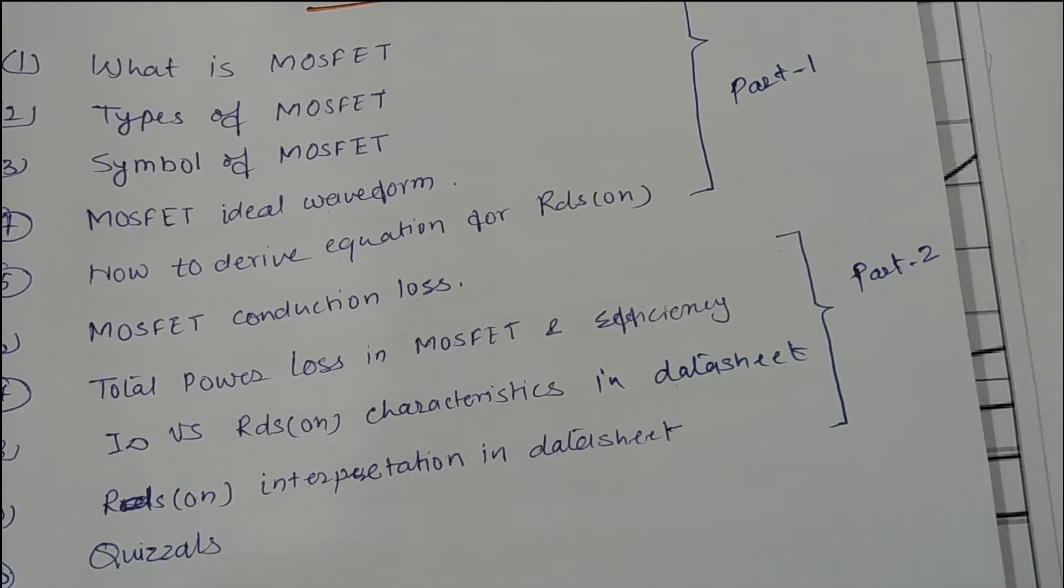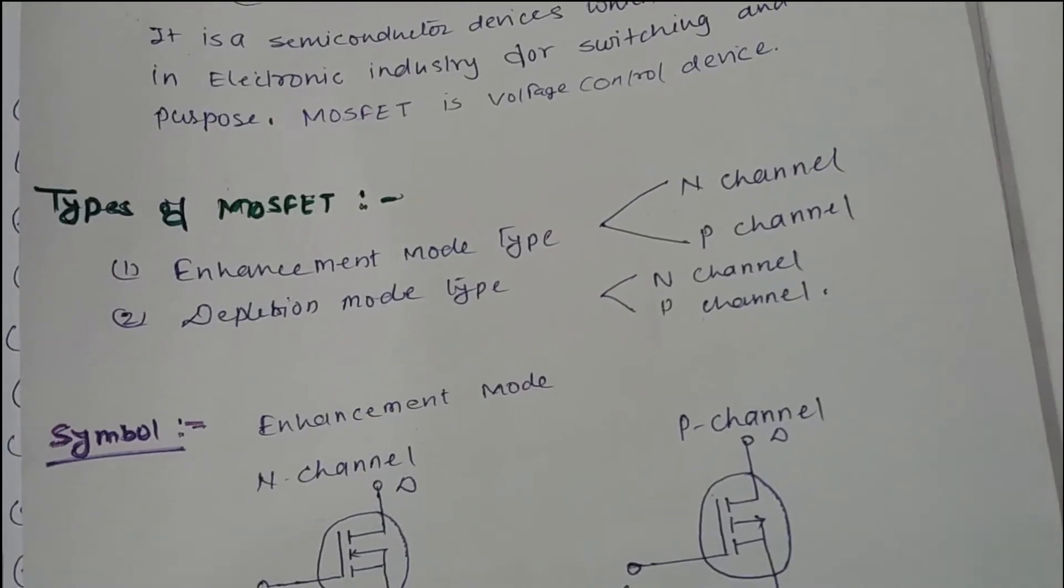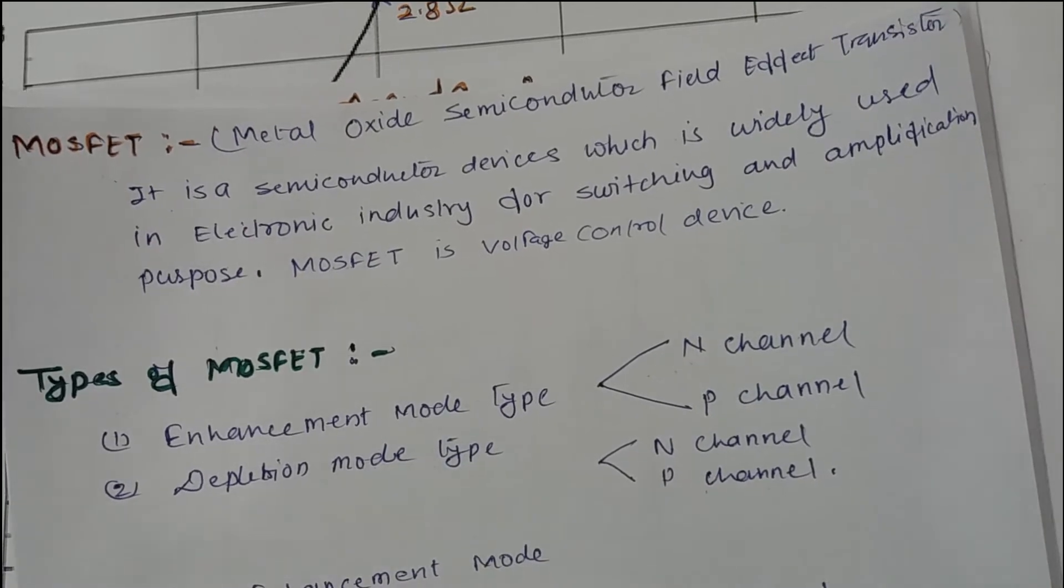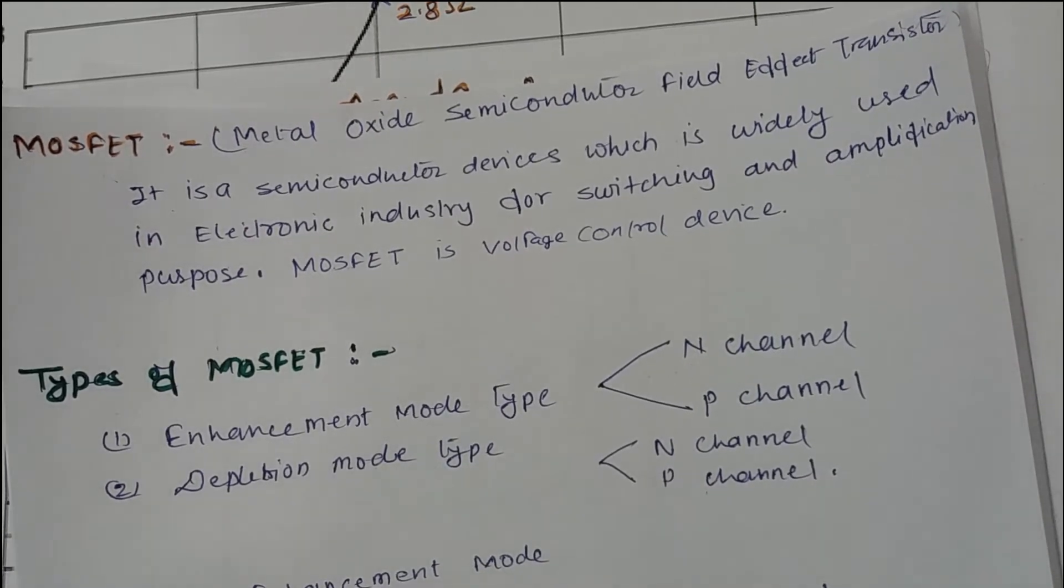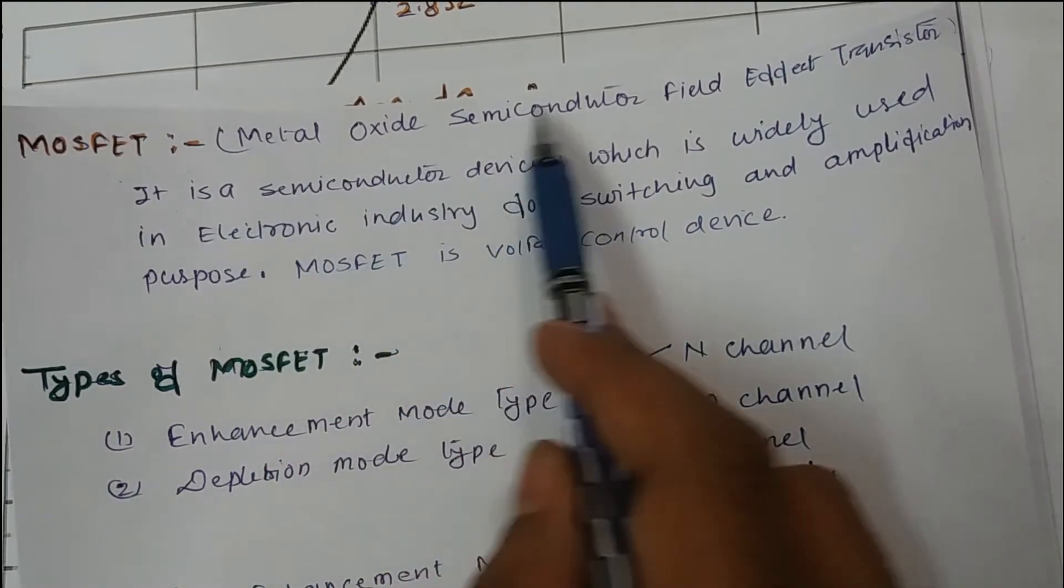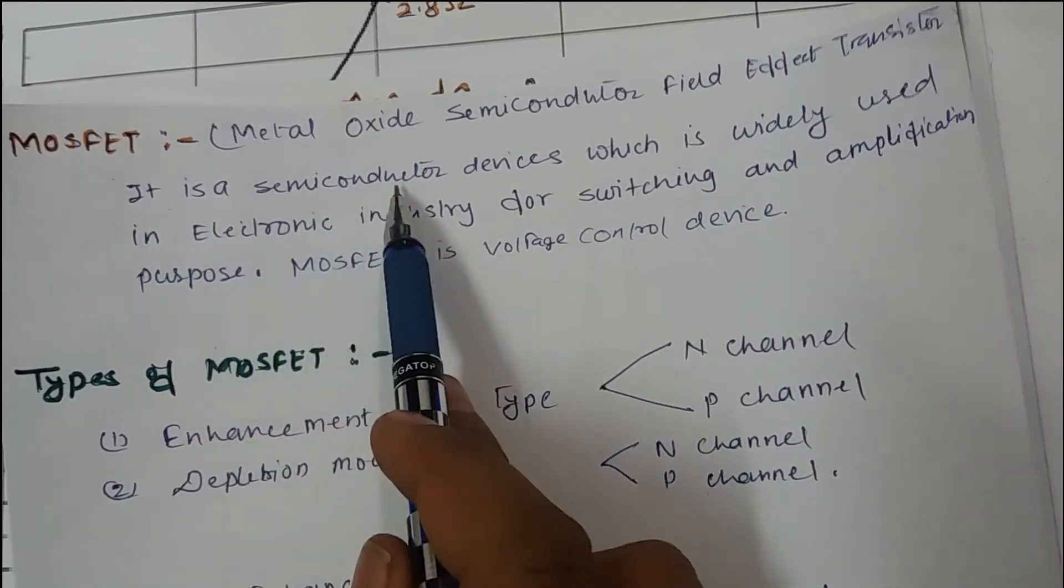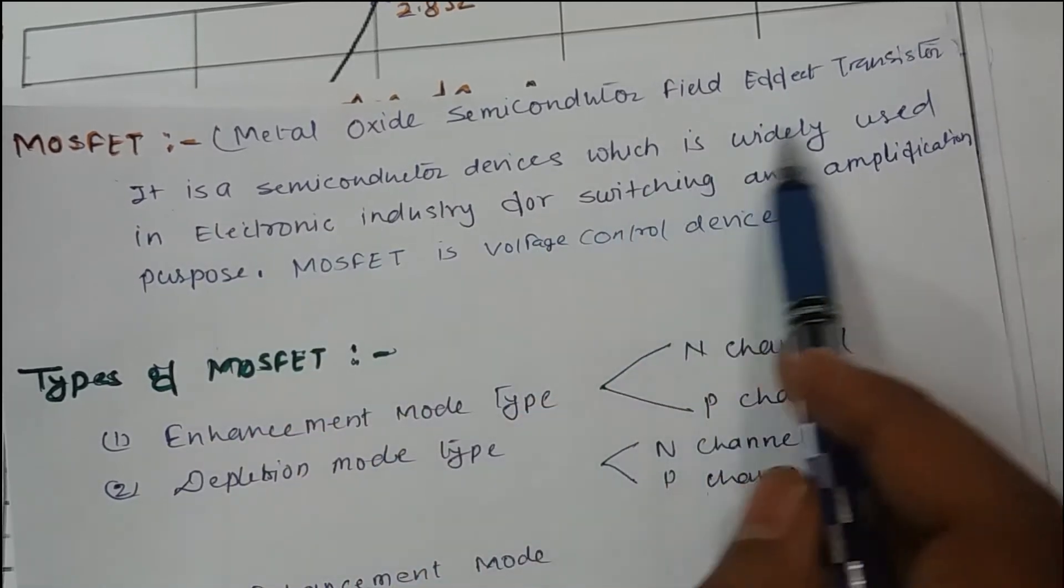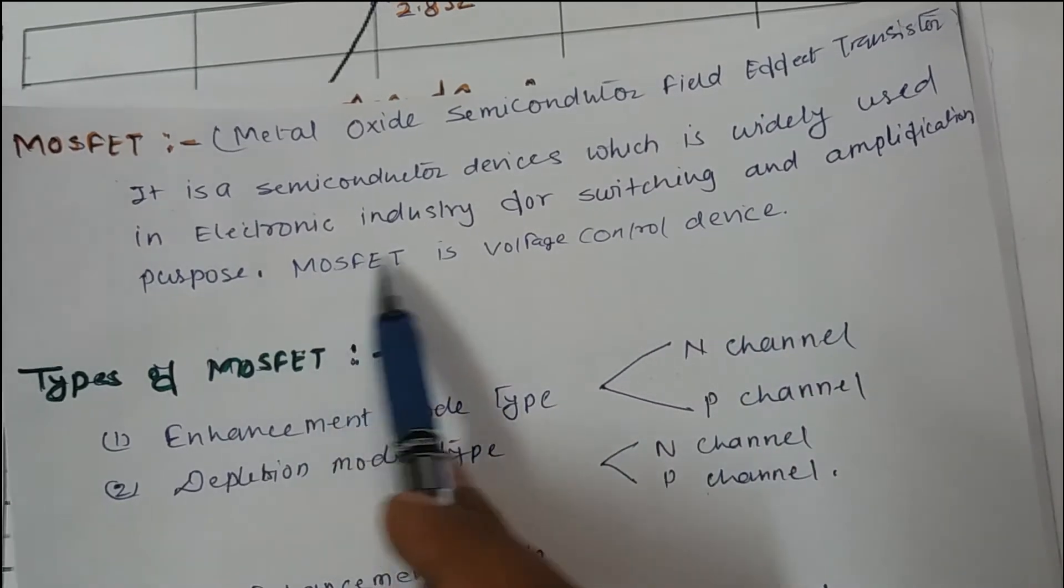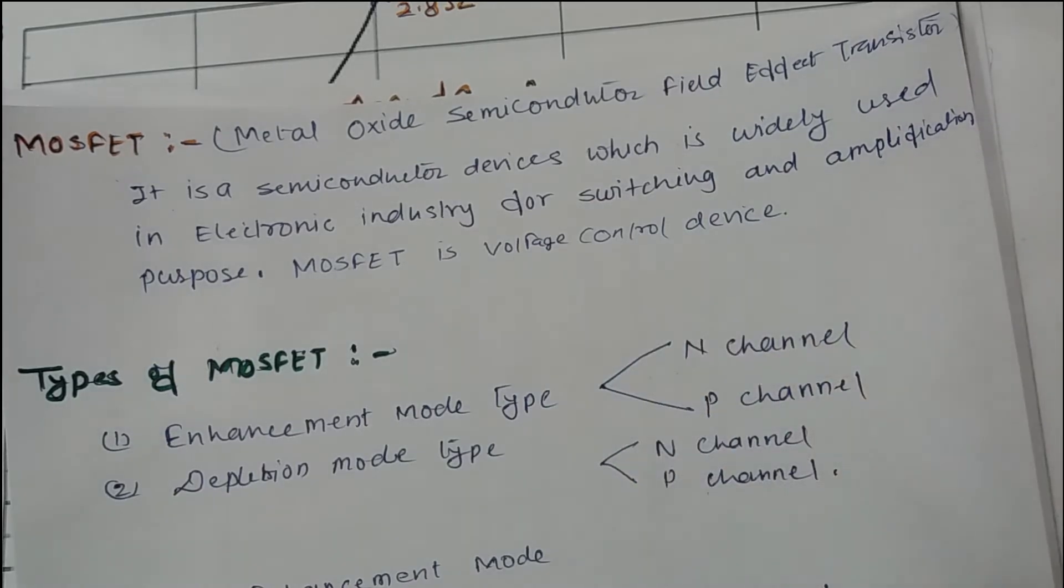Now let's discuss the things. First is what is MOSFET. MOSFET is Metal Oxide Semiconductor Field Effect Transistor. It is a semiconductor device which is widely used in electronics industry for switching and amplification purposes. MOSFET is a voltage controlled device.